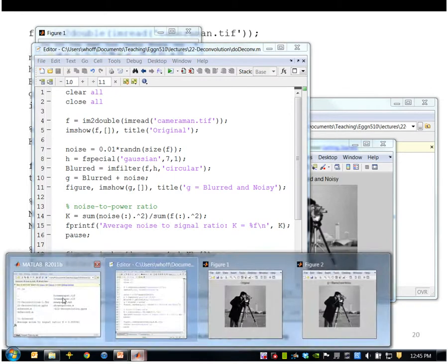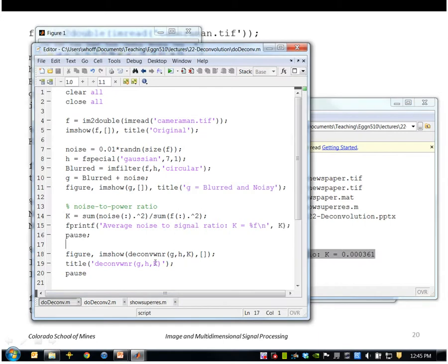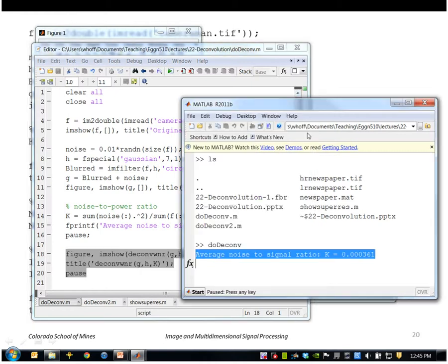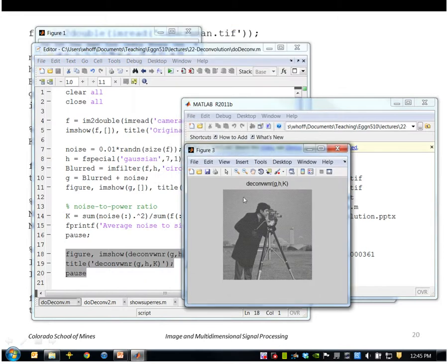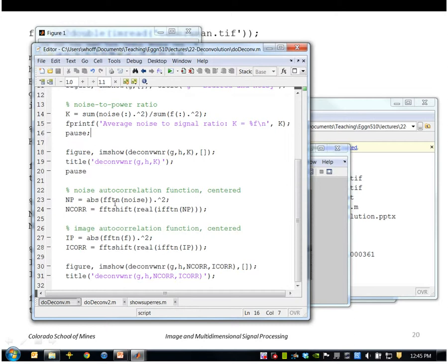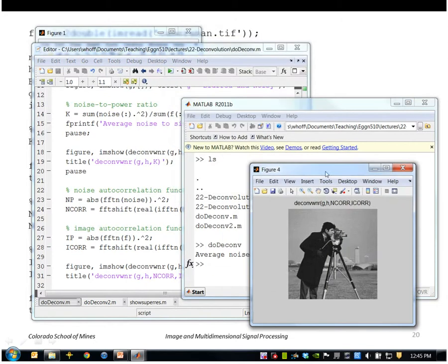That is actually shown here. Then I'll apply the deconvolution Wiener function using a constant value of K, the value of K I've got here. So this is the reconstructed image using that. And then finally I'll apply the deconvolution Wiener function using the actual noise and signal spectrum and this is the result of that.